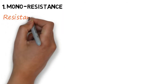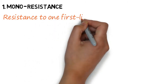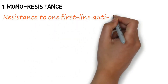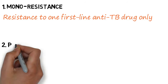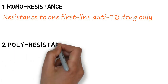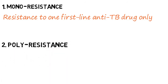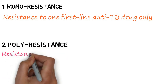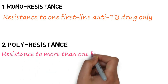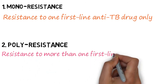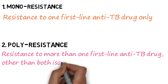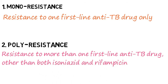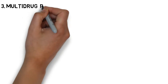In mono resistance, TB is resistant to one of the first line anti-TB drugs only. In poly resistance, TB is resistant to more than one first line anti-TB drug, other than both isoniazid and rifampicin.